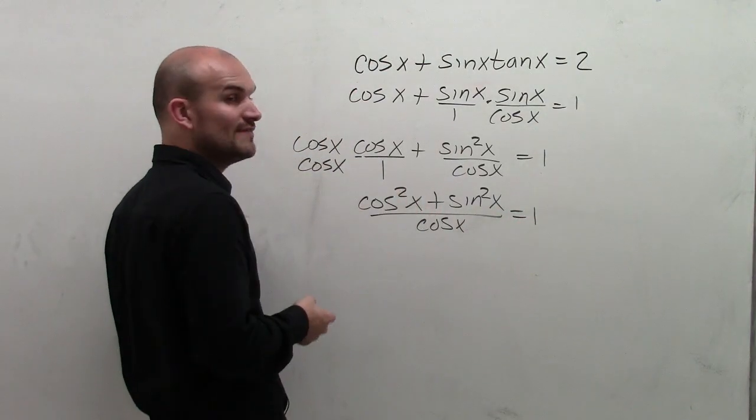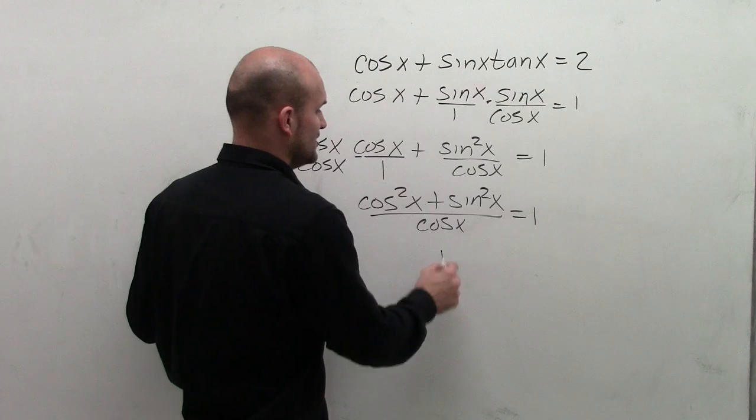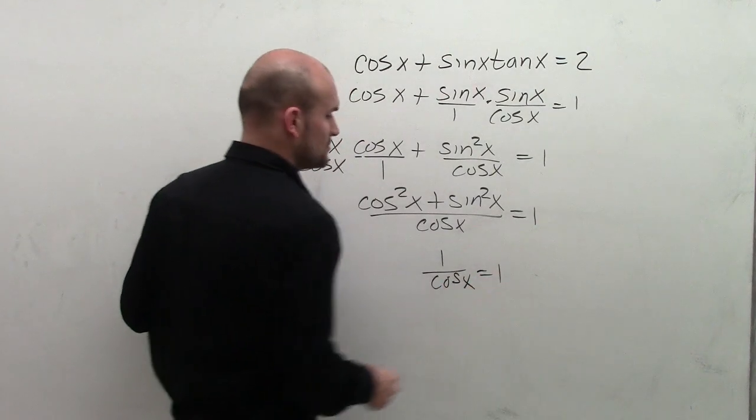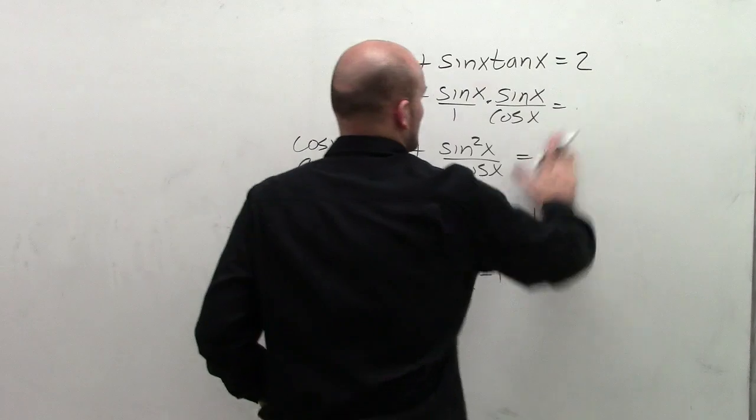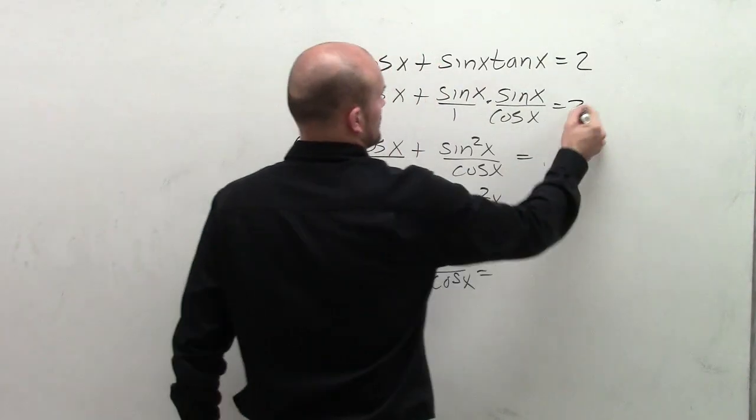Well, cosine squared of x plus sine squared of x is going to equal 1 over cosine of x equals 1. Equals, not 1, that all equals 2. Sorry.